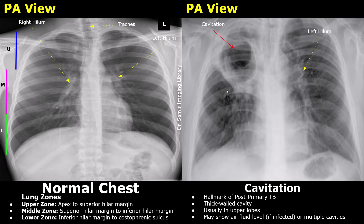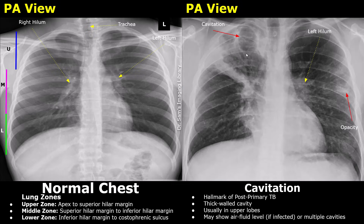Cavitation is a hallmark of post-primary tuberculosis and indicates severe pulmonary TB. On an X-ray, it appears as a thick-walled cavity with a radiopaque wall and a radiolucent dark center. Multiple cavities may be seen in some cases, and it is usually present in the upper zones. Thick radiopaque walls are noted with a heterogeneous radiolucent center, and these findings are seen in better detail on a CT scan, so HRCT is recommended for these cases as well as for the cases seen earlier.